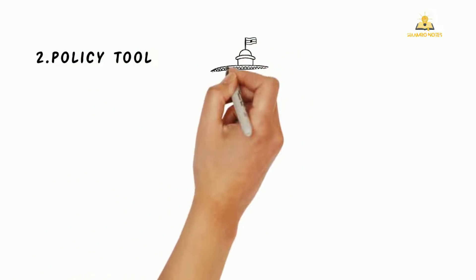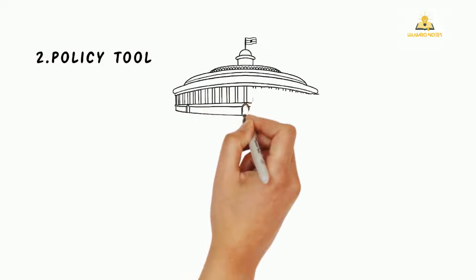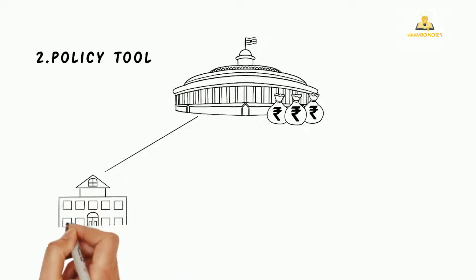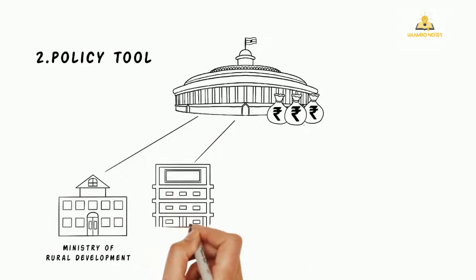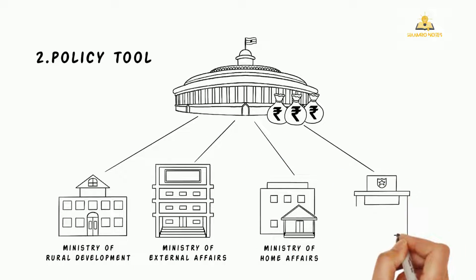Second, the Budget is a policy tool. By seeing how much money is being allocated to one ministry over another, you can see the government's policy priorities and vision for that year.